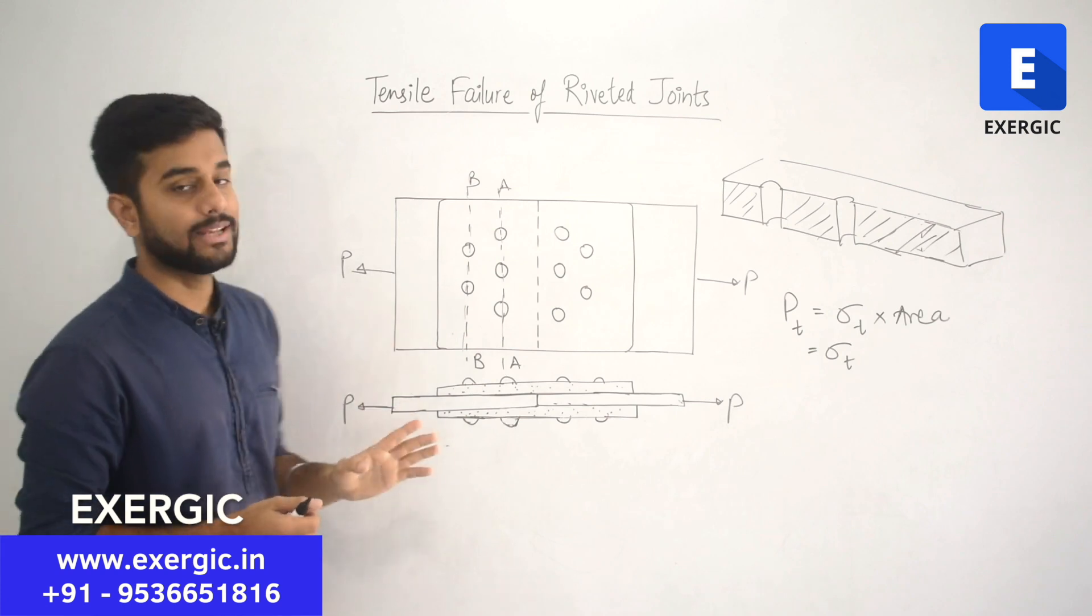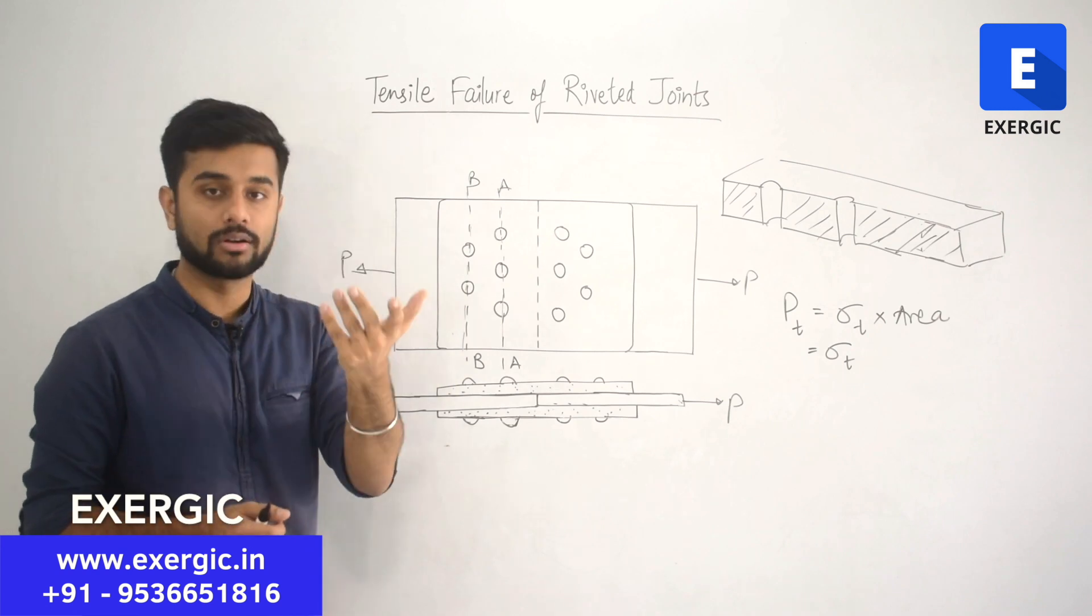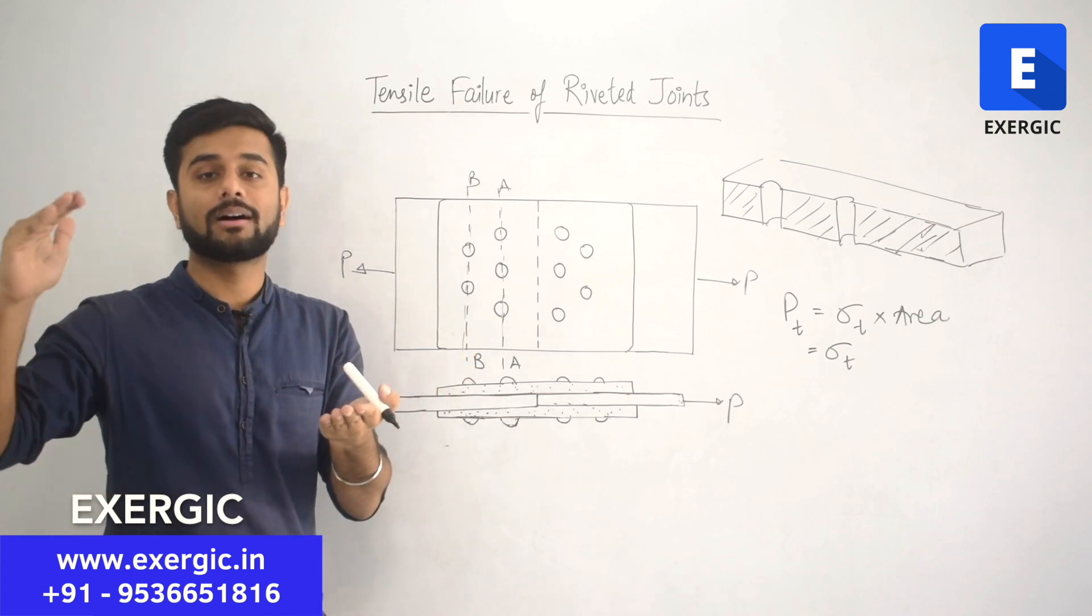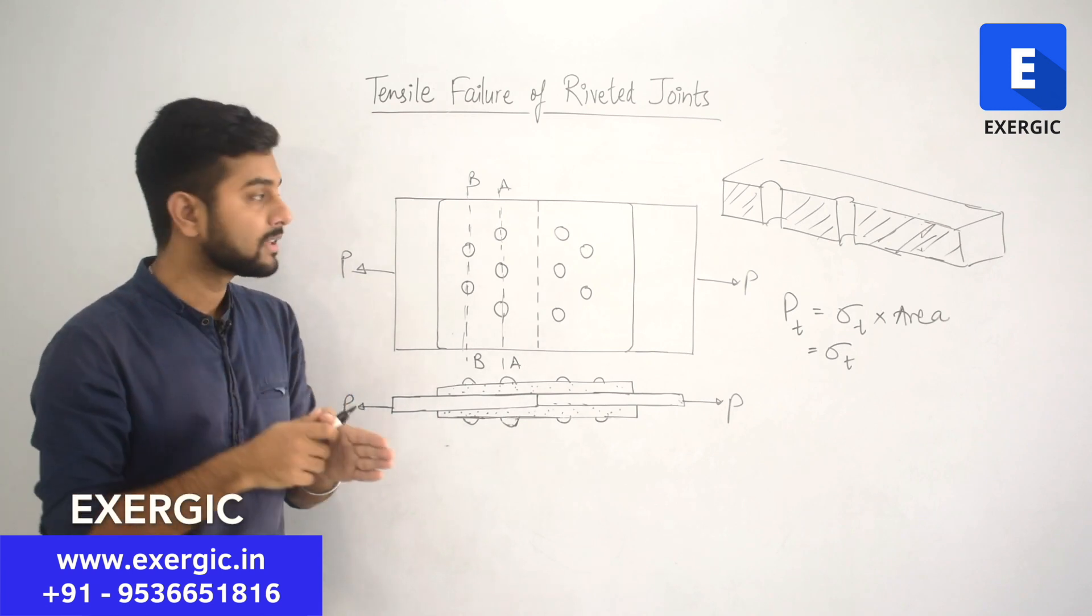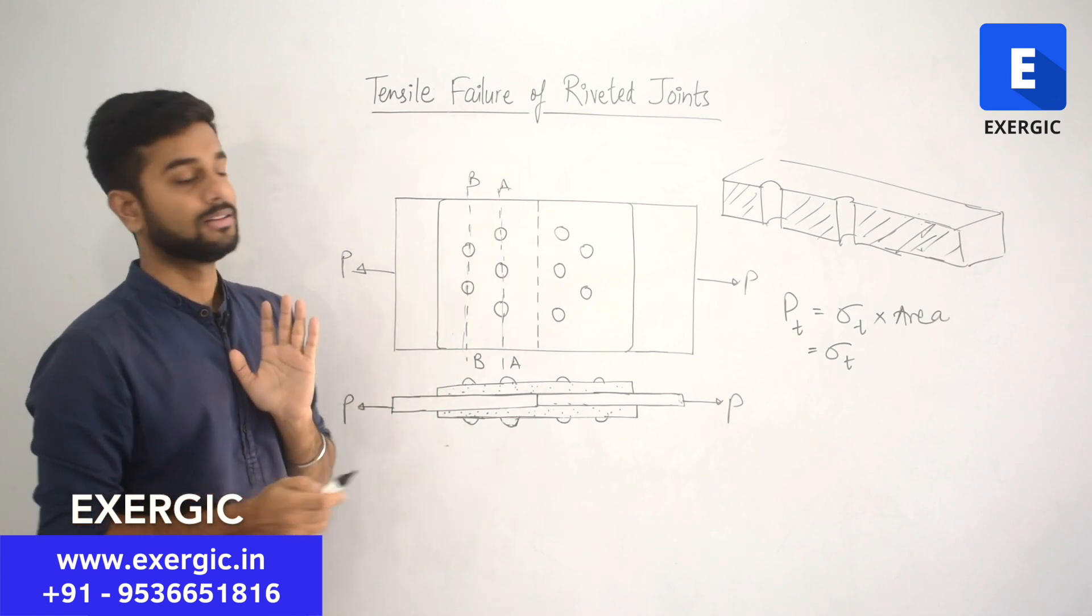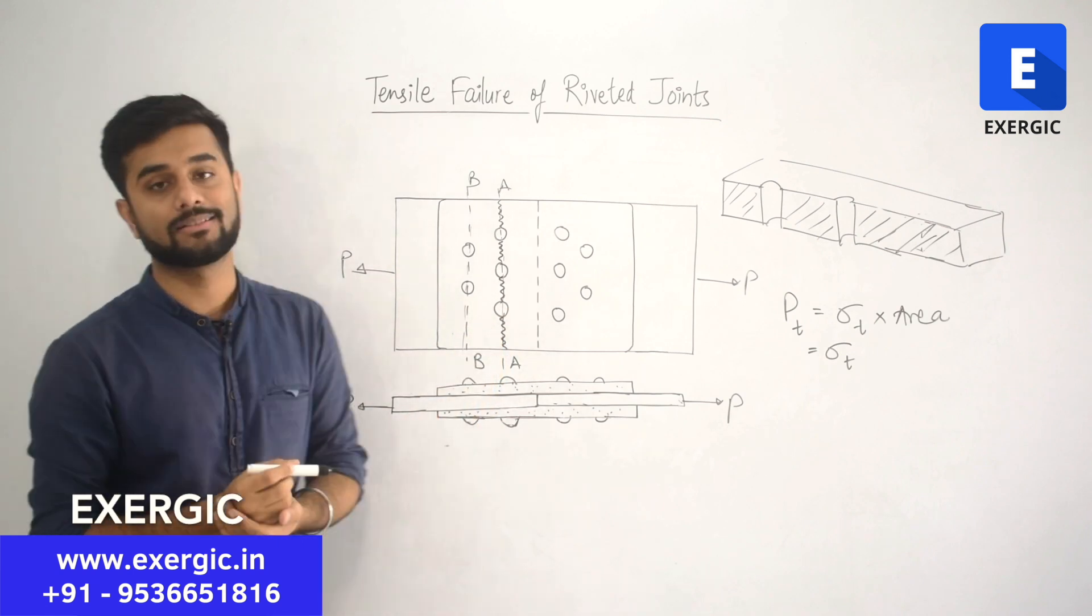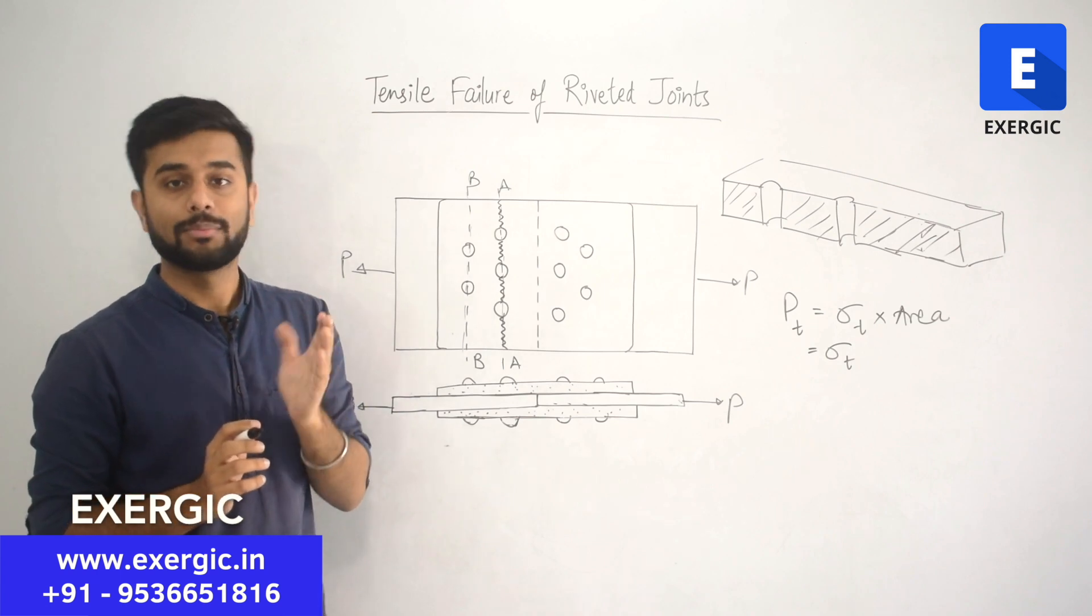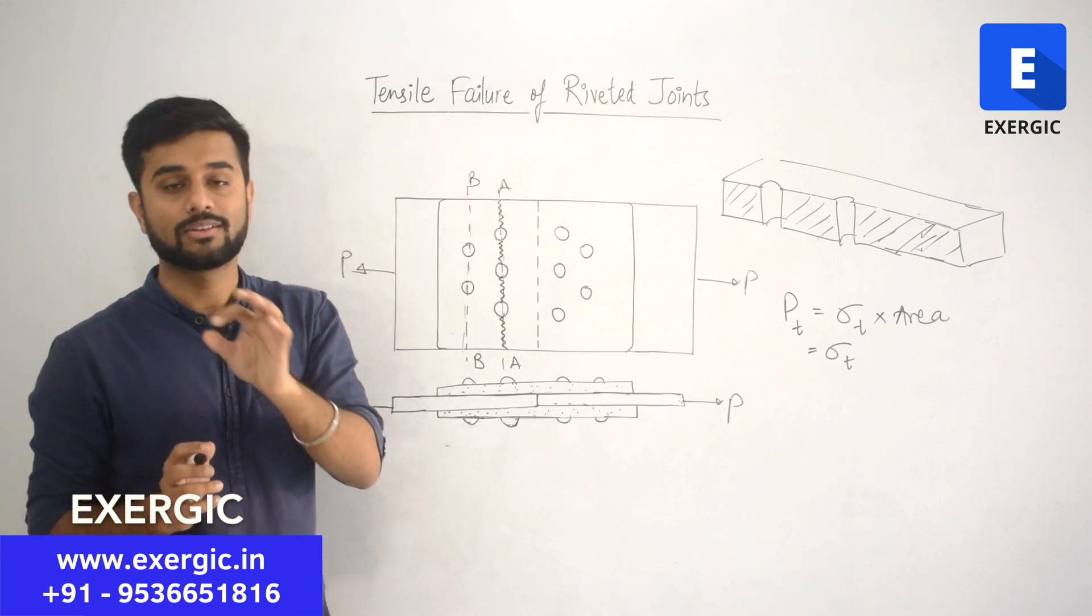If you look at the failure along AA, definitely AA will fail first because area of BB section area of plate in BB is more as compared to area of plate in AA. As you will keep on applying the load, let's say you started applying load gradually from 0 up to the value of P. Obviously lesser value will be reached first. Since section AA will fail at lesser value of P, AA will fail. This plate here will get fractured like this as a result of tensile failure. But has the joint failed? This is also a condition.